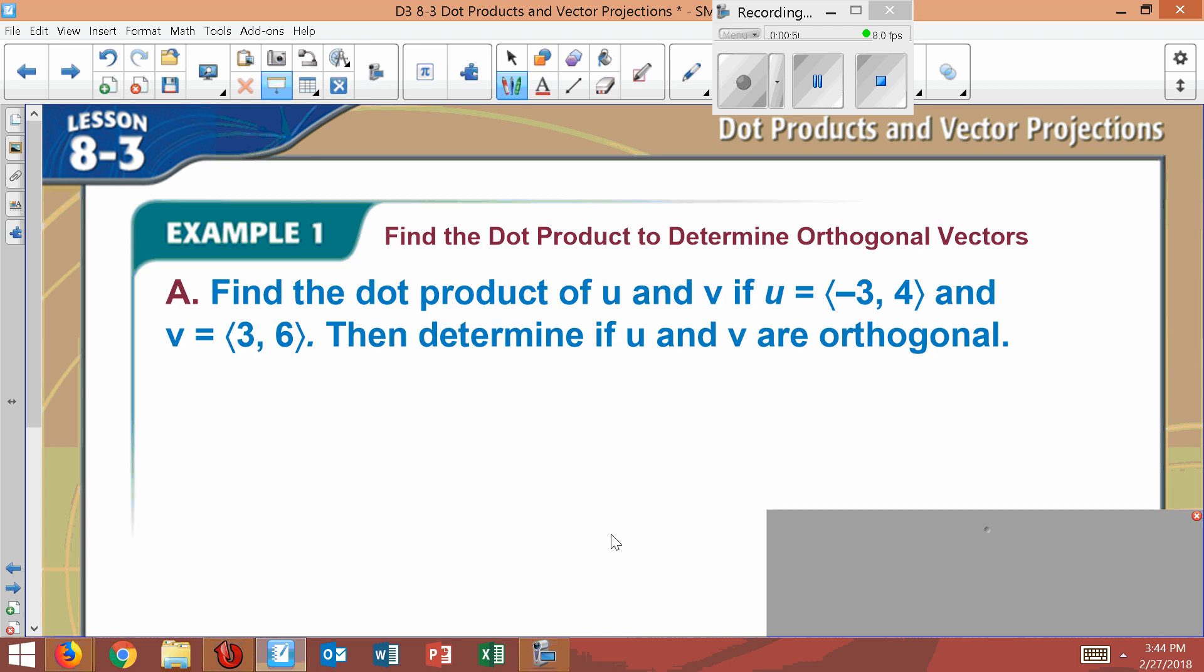So that's a test to see if something is orthogonal or not. Example one, find the dot product of U and V if U is negative 3 comma 4 and V is 3 comma 6. Then determine if U and V are orthogonal.